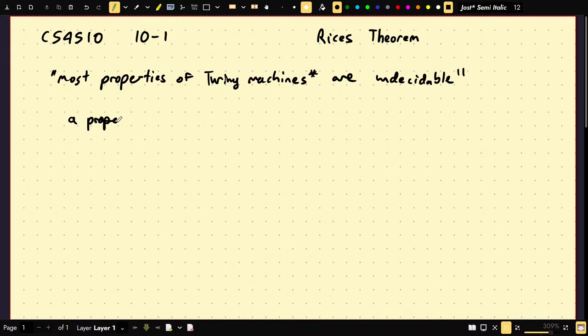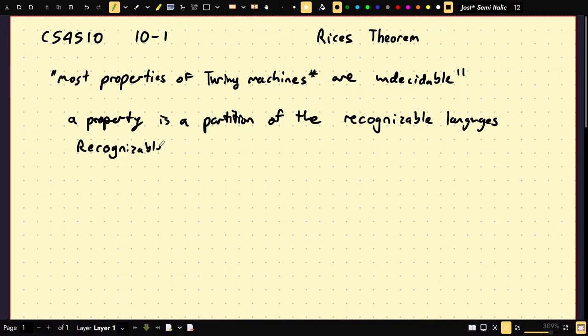So first off, what is a property? A property is something that you have a natural understanding of as a property of something. A property is a partition of the recognizable languages, such that the recognizable languages is equal to some P union P complement.